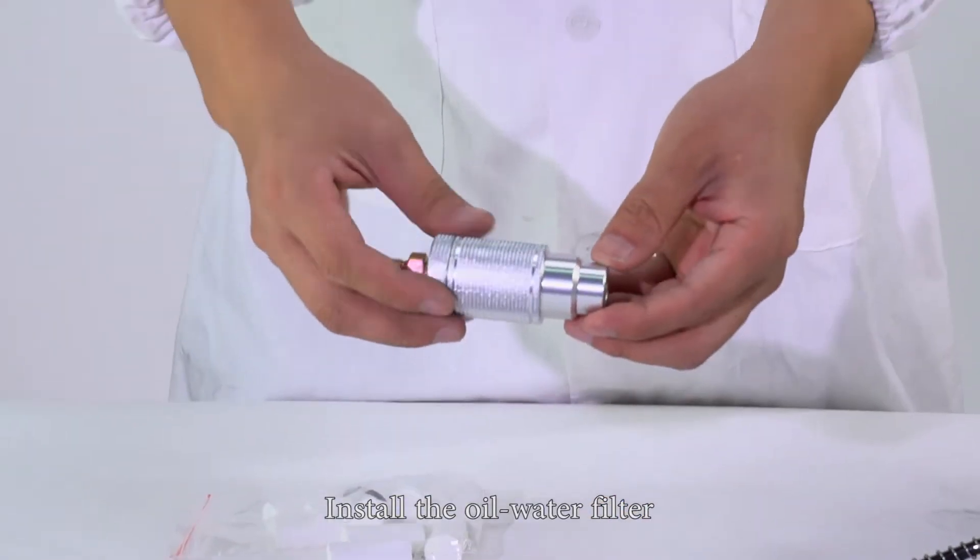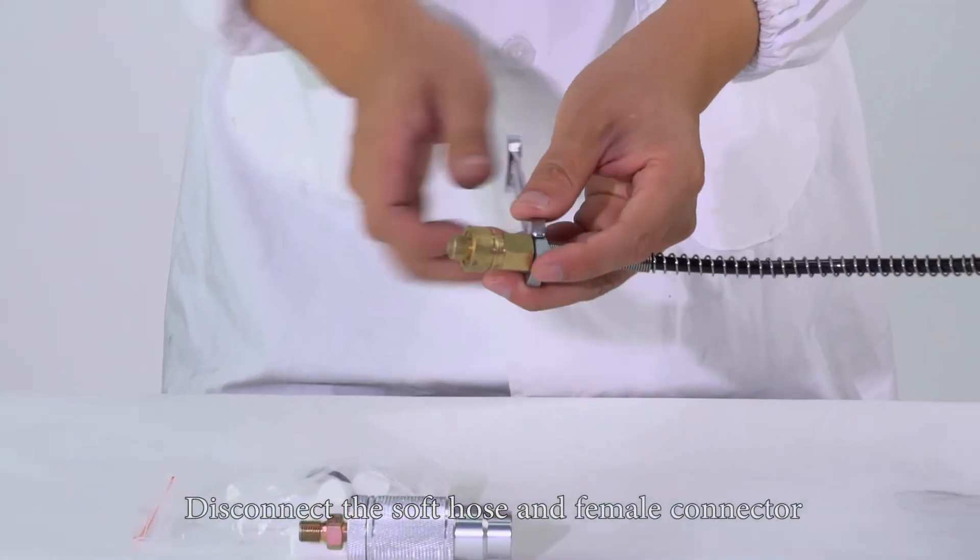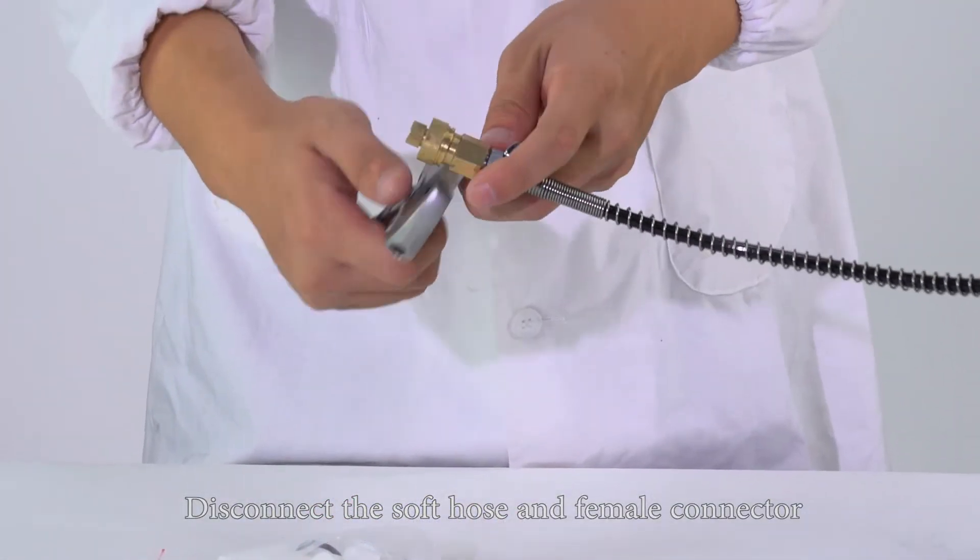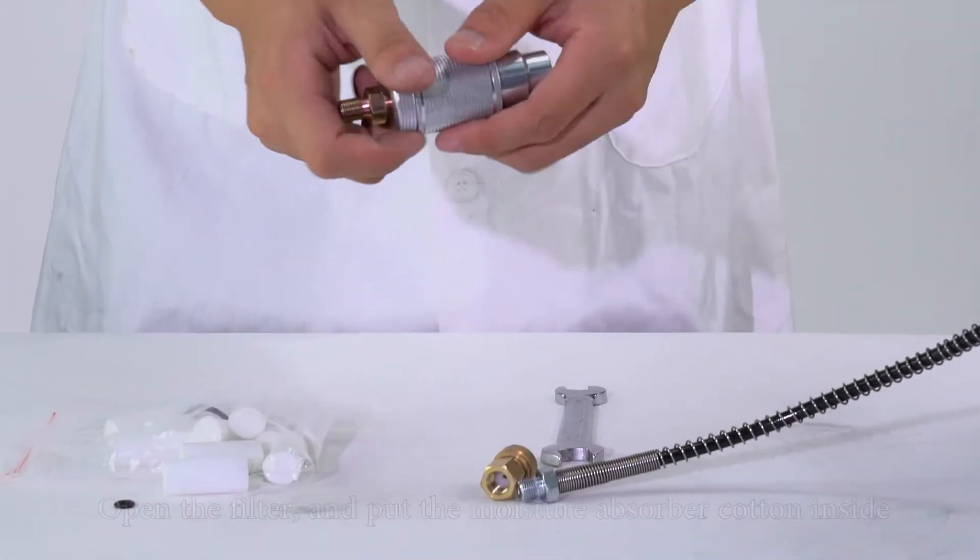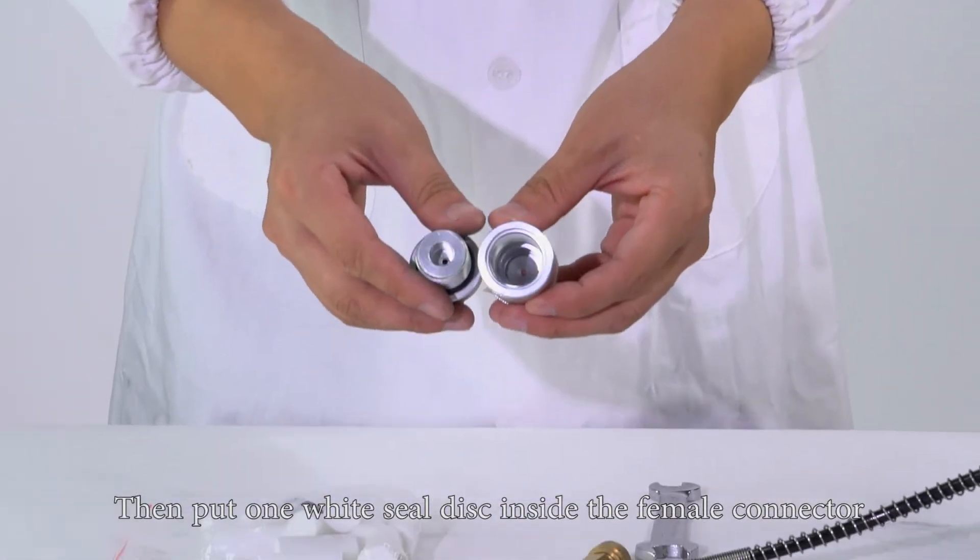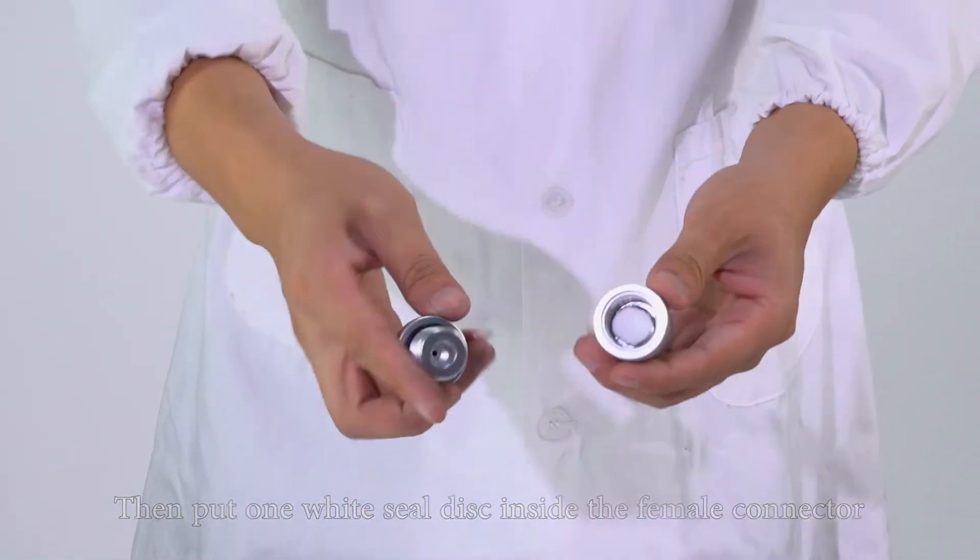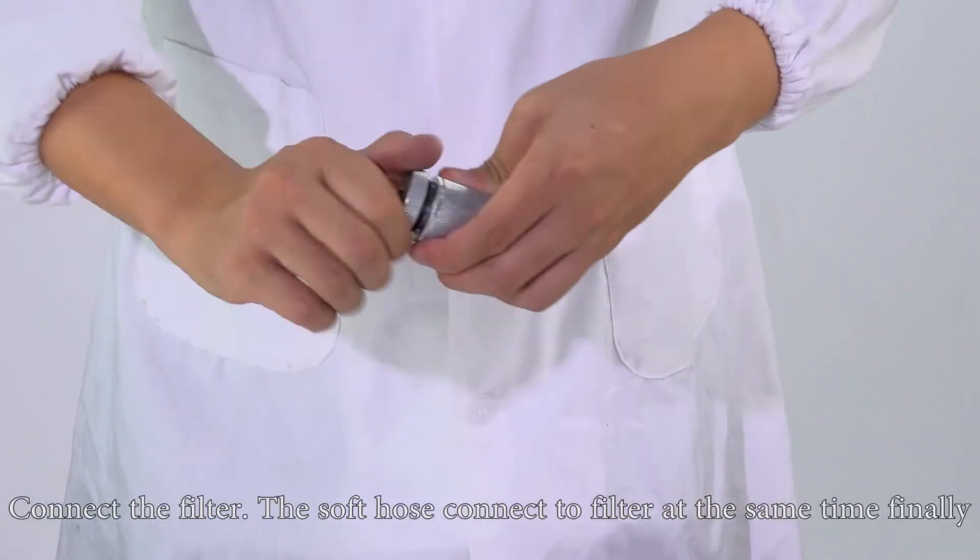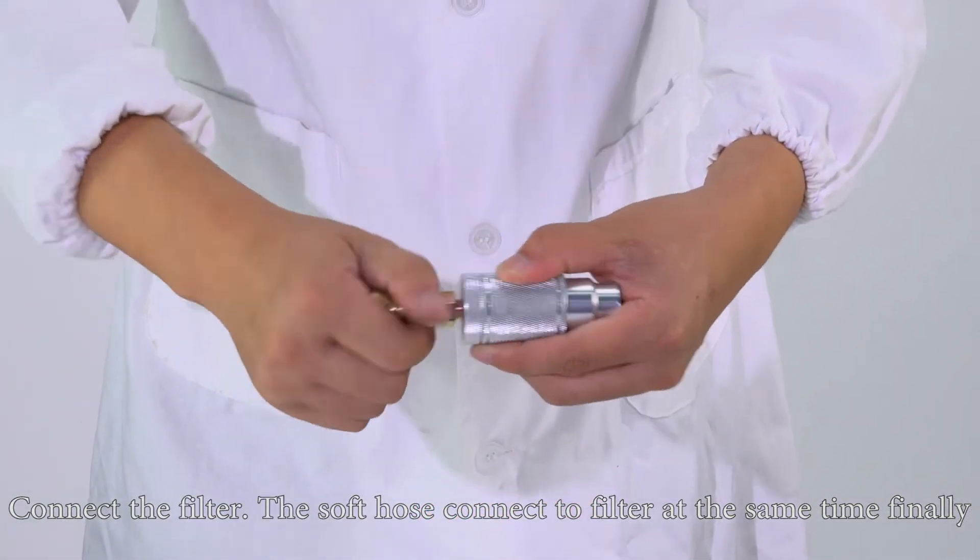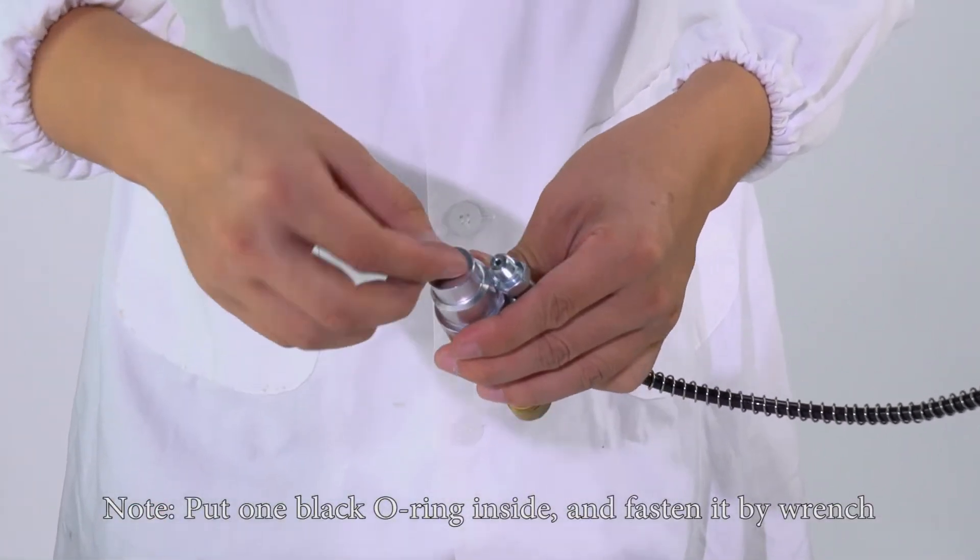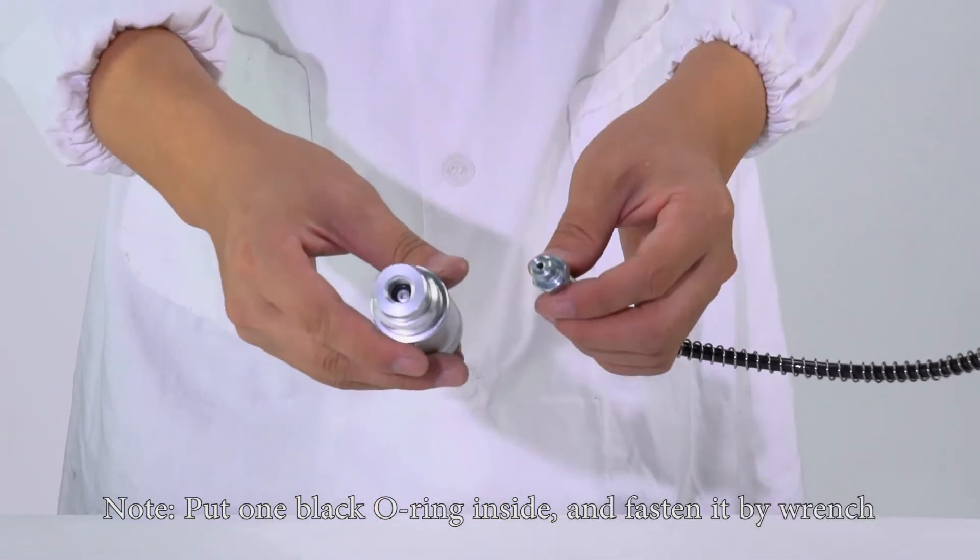Install the oil water filter by disconnecting the soft hose and female connector. Open the filter and put the moisture absorber cotton inside, then put one white seal disc inside the female connector. Connect the filter and soft hose to the filter simultaneously. Note: put one black O-ring inside and fasten it with a wrench.